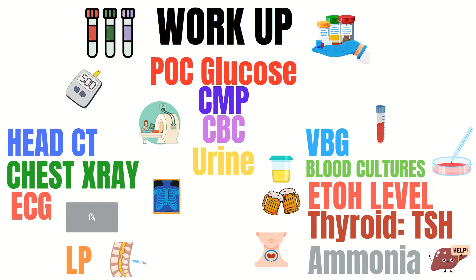You'll also commonly see a CT head, chest x-ray, and ECG ordered. The head CT helps rule out brain bleeds and other brain pathologies. The chest x-ray can help assess for pneumonia, cardiomegaly, and fluid overload. The ECG helps ensure an arrhythmia is not the cause, or identify a STEMI, which can affect perfusion and cause altered mental status. If indicated by presentation, a VBG, ammonia, TSH, and blood cultures may also be ordered. If there is suspicion of CNS infection, a lumbar puncture may be performed to assess the CSF.